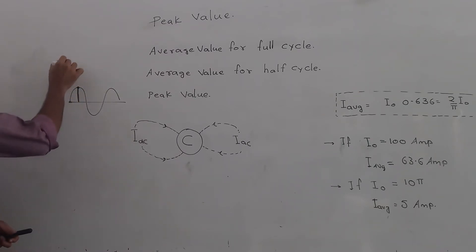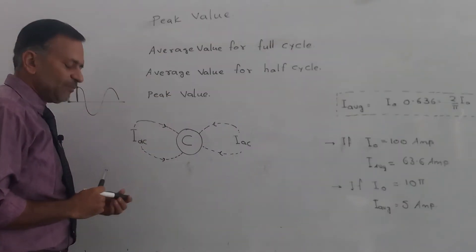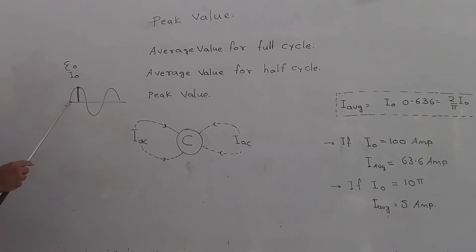Now comes average value for full cycle. Full cycle means starting from here—the positive half cycle—and then going to negative half cycle. This is one full cycle of AC.